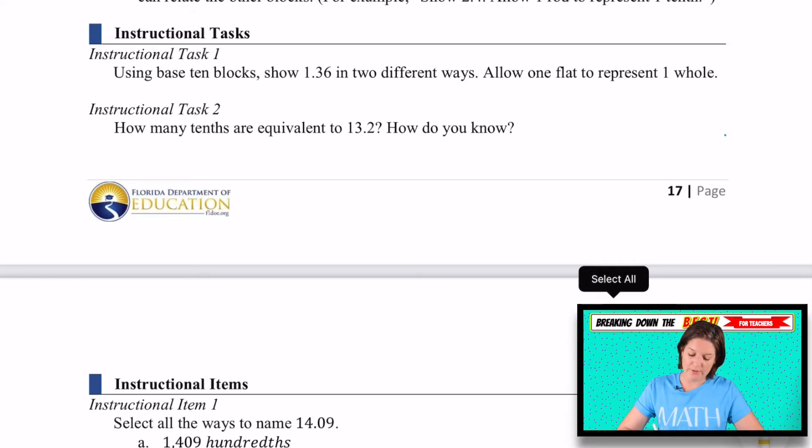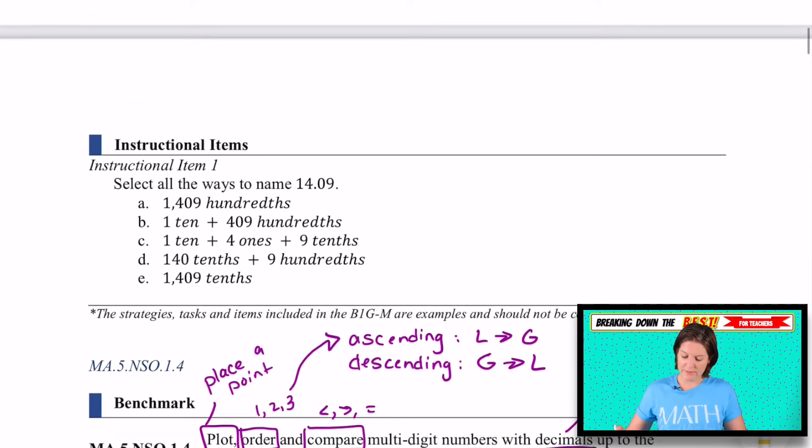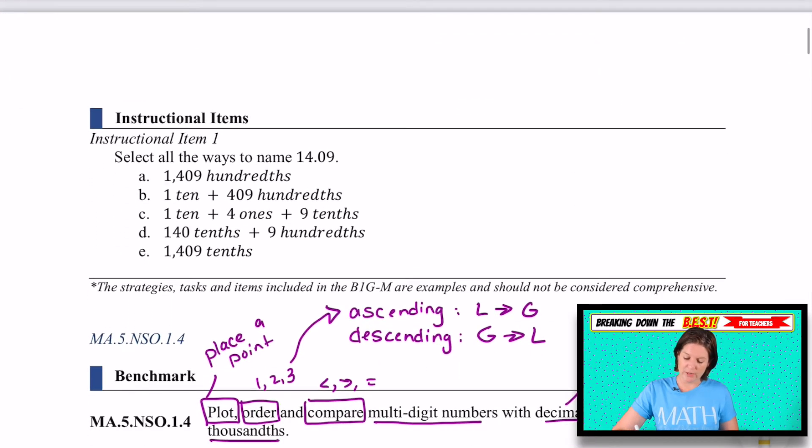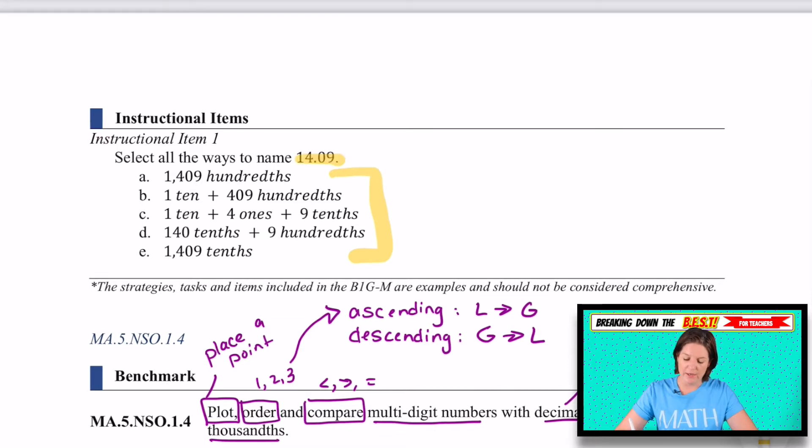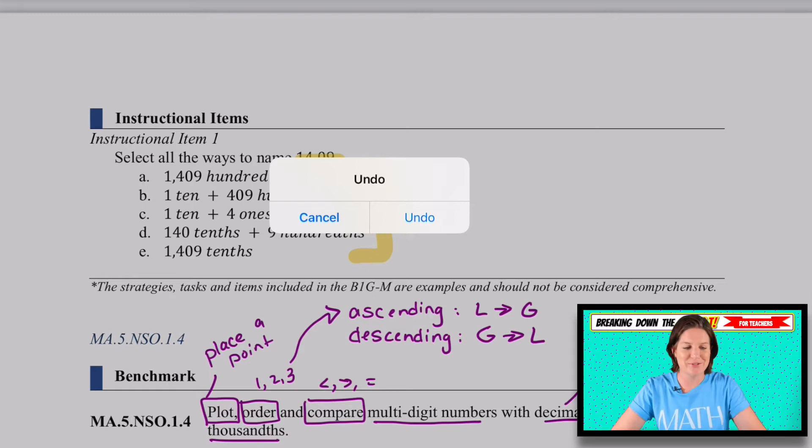Whatever you call a one, the next one down needs to be the tenth, the next one down needs to be the hundredth, the next one down needs to be the thousandth, and so on. And a lot of times here, what I'm seeing in instructional tasks is that they'll tell you what each one needs to represent. So using base 10 blocks, here's an example of an instructional task, show one and thirty six hundredths, two different ways, allowing one flat to represent one whole. So calling one flat, one whole, how would you model the rest of them, right? Okay. And then here is a way of how these numbers could be decomposed. Of course, you'd have to go work through each one of them to select the ones that equal fourteen and nine hundredths, which we go over problems like that in Taking on the BEST. So let's go over to the membership area so you can see what you have access to, okay?